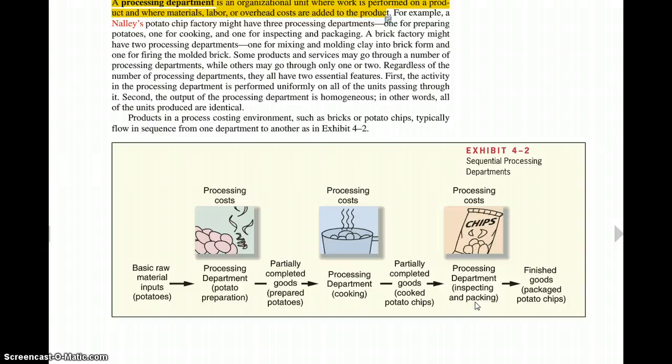And they could have their own work in process accounts. Their own labor will be associated, and materials will be associated into their own work in process account. And then these costs may move, so the costs from the potato preparation might be moved over here into the process department for cooking. And finally, it'll all go over to the inspecting and packing, where it finally becomes finished goods, and that is our completed product that we are willing to sell. So we're just accumulating costs in these products for work in process, and eventually it'll all go to finished goods.